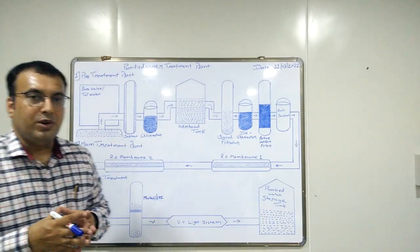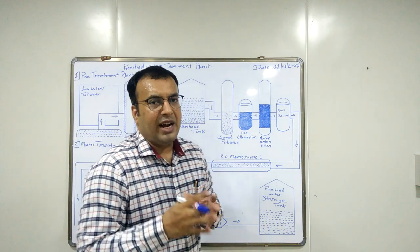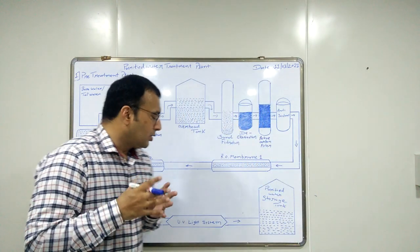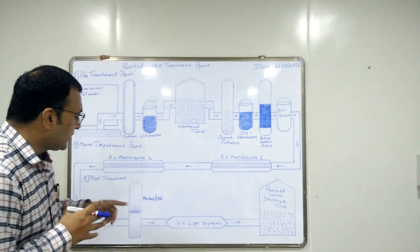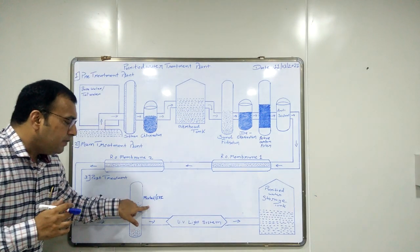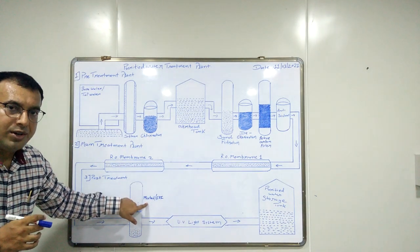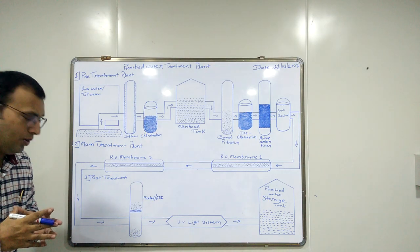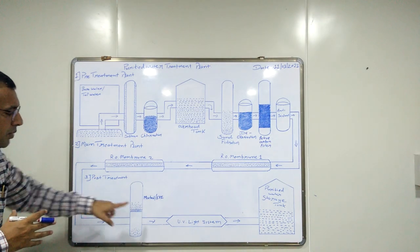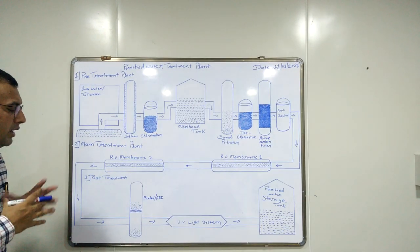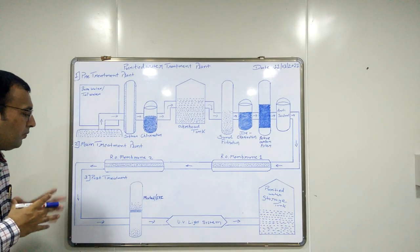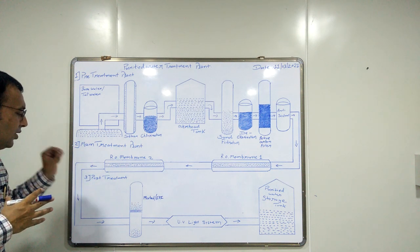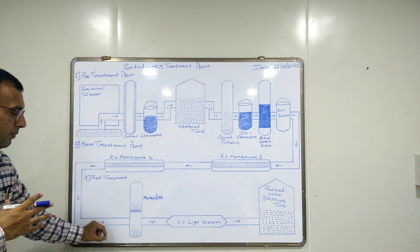How to regenerate this mixed bed unit? Commonly, diluted hydrochloric acid and diluted sodium hydroxide are used to regenerate it. This mixed bed unit also controls the conductivity of water, which should be less than 1 microsiemens. So the main function of the mixed bed unit or EDI unit is to remove hydrogen and hydroxyl ions from the water and control the conductivity.